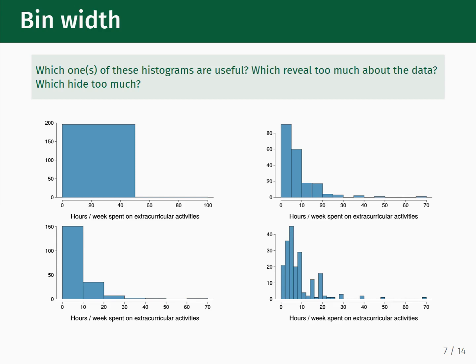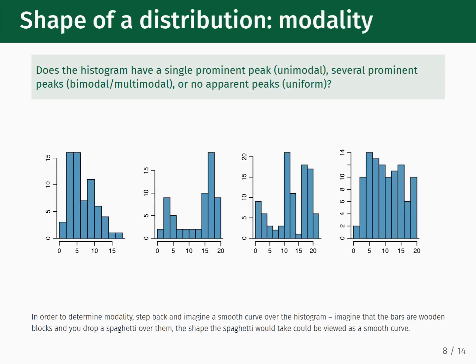The plots in the upper right and the lower left are better choices, as both show the overall trends. Here are examples that show what we mean by the term modality. When looking at a data distribution, look for prominent peaks in the histogram, which you can figure out by imagining what you would get if you draw a smooth curve over the histogram. One way to conceptualize this is to think what would happen if the histogram bars were actually wooden blocks and you dropped a strand of spaghetti or a string over them. The shape it would take would closely resemble the smooth curve, and the number of peaks determines its modality.